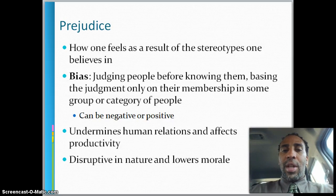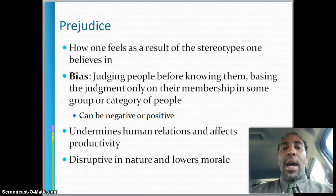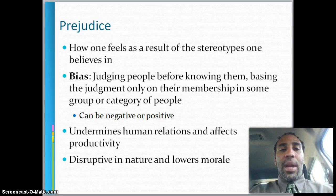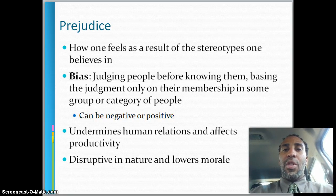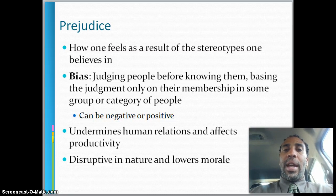Prejudice is how one feels as a result of the stereotypes one believes in — bias is judging people before knowing them, basing the judgment only on their membership of a group. It can be negative or positive. For instance, if I like the Dodgers and you also like the Dodgers, I might want to hire you. But if you're an Angels fan, I might not. People try to pretend they have no biases, but people definitely have biases. You typically hire someone more like you. It undermines human relations, affects productivity, is disruptive in nature, and lowers morale.